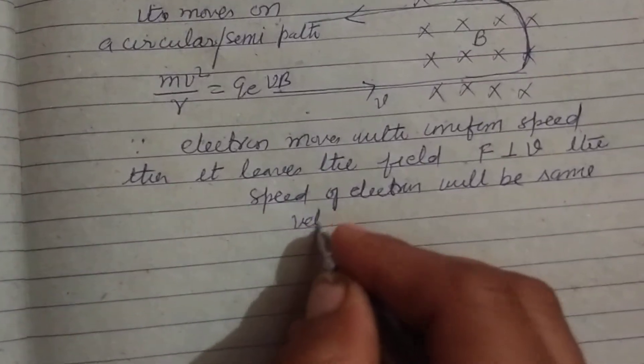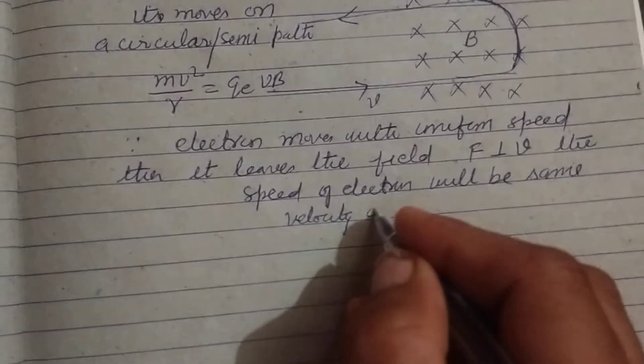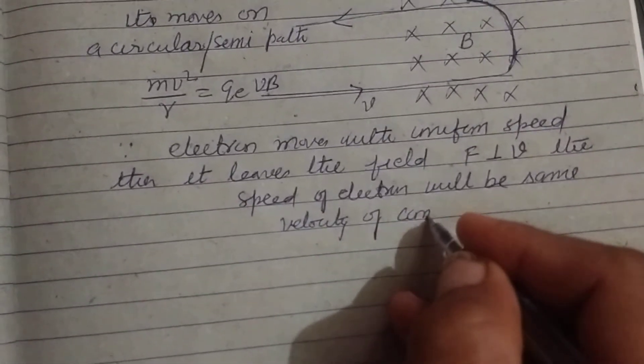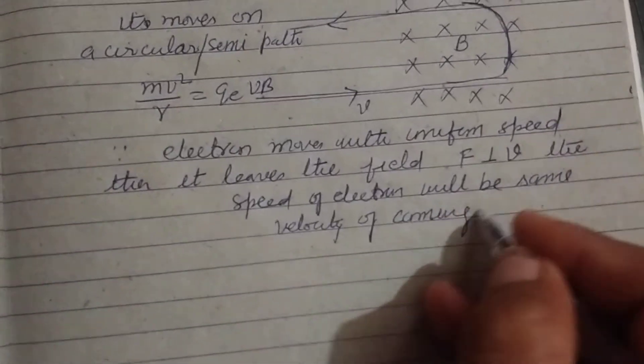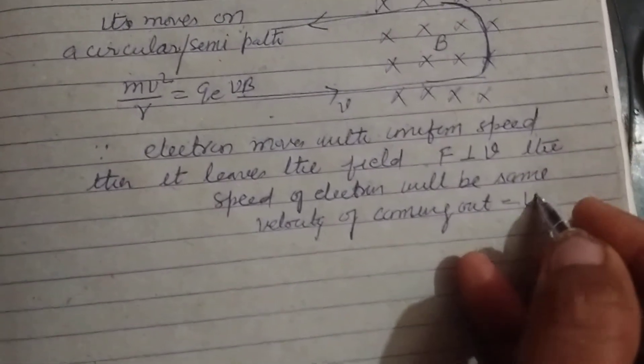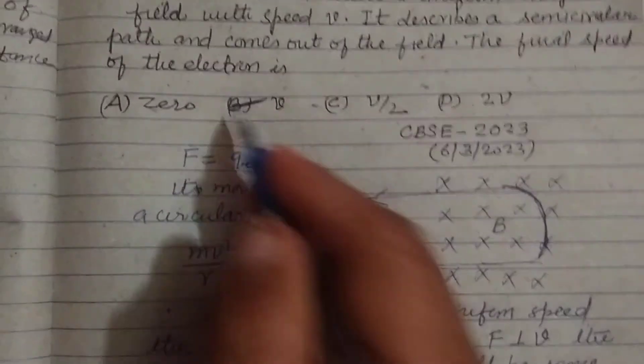So the velocity coming out will be v. The answer to this question is option B: v.